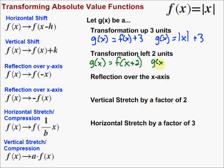So g(x) is equal to f of (x plus two). When we have f of something, we replace x with whatever's inside in our function f. Looking at our function f, x gets replaced with x plus two — so it becomes the absolute value of x plus two.